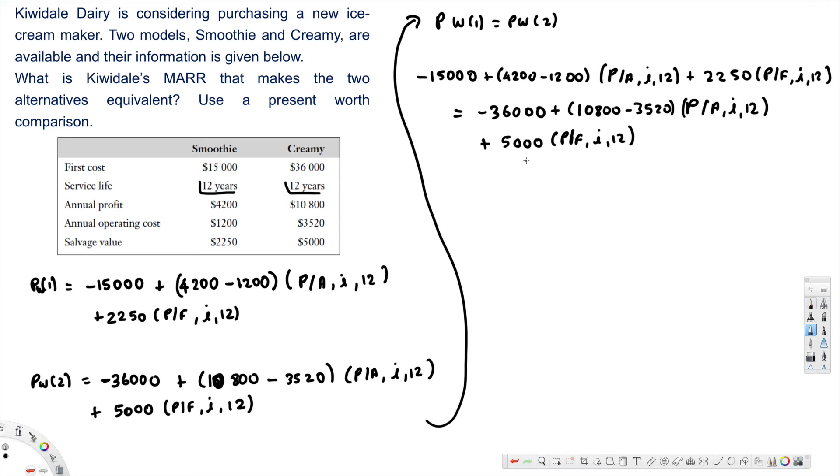Okay, let's take some values. At i equals 15%, we have P/A, i, 12 equals 5.4206, and P/F, i, 12 equals 0.18691. The right-hand side becomes $23,714.